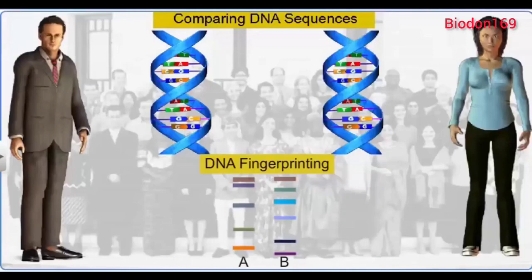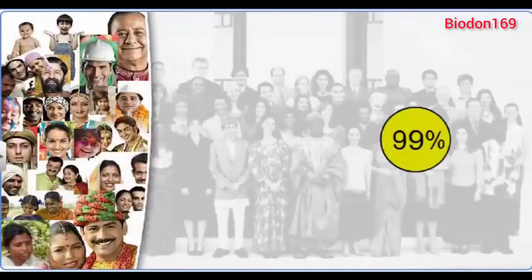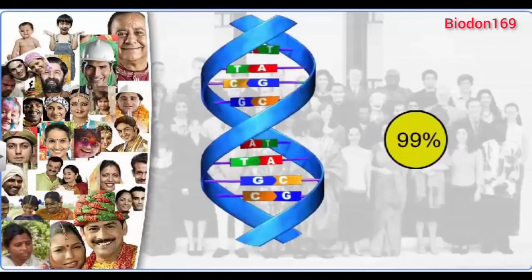In human beings, 99% of DNA base sequences are identical and are known as the bulk genomic DNA.